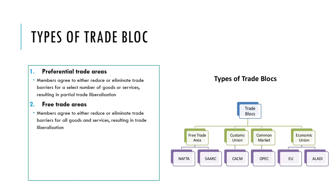The next type is a free trade area, where trade barriers are removed for all goods and services — no tariffs, no quotas on any goods and services between the member countries. This is probably the most common example of a trade bloc.